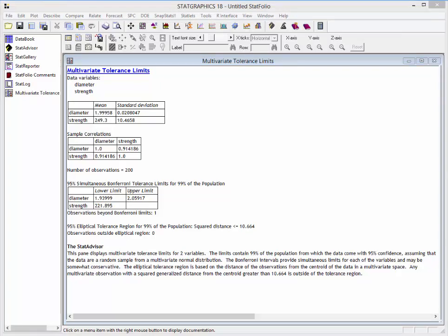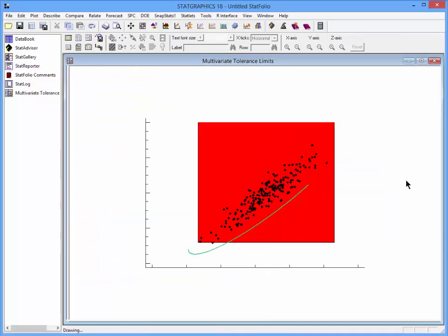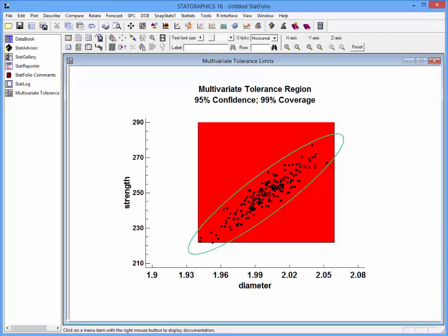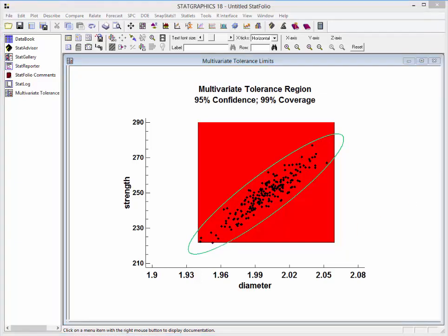We can see both tolerance regions by looking at the graph I requested. On this graph, the open-ended rectangular region shown in red is the limits defined by the Bonferroni method 1. If you look very closely, you'll see that there is one observation that's below the lower tolerance limit for strength. On the other hand, the elliptical tolerance region contains all 200 of my observations.